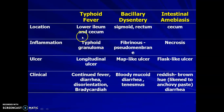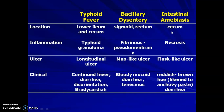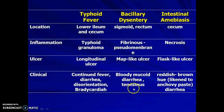Typhoid fever occurs in the lower ileum and cecum; the inflammation is a typical granuloma type, and typhoid ulcers are longitudinal in nature. Clinically, typhoid shows continuous fever, diarrhea, disorientation, and bradycardia. In bacillary dysentery the location is sigmoid and rectum; in intestinal amoebiasis it is the cecum. The inflammation in dysentery is fibrinous pseudomembrane type, whereas in amoebiasis it is necrosis type. In bacillary dysentery you see map-like ulcers, whereas in intestinal amoebiasis the ulcer is flask-like. Clinically, dysentery shows bloody mucoid diarrhea and tenesmus, whereas in amoebiasis you see reddish-brown hue diarrhea.